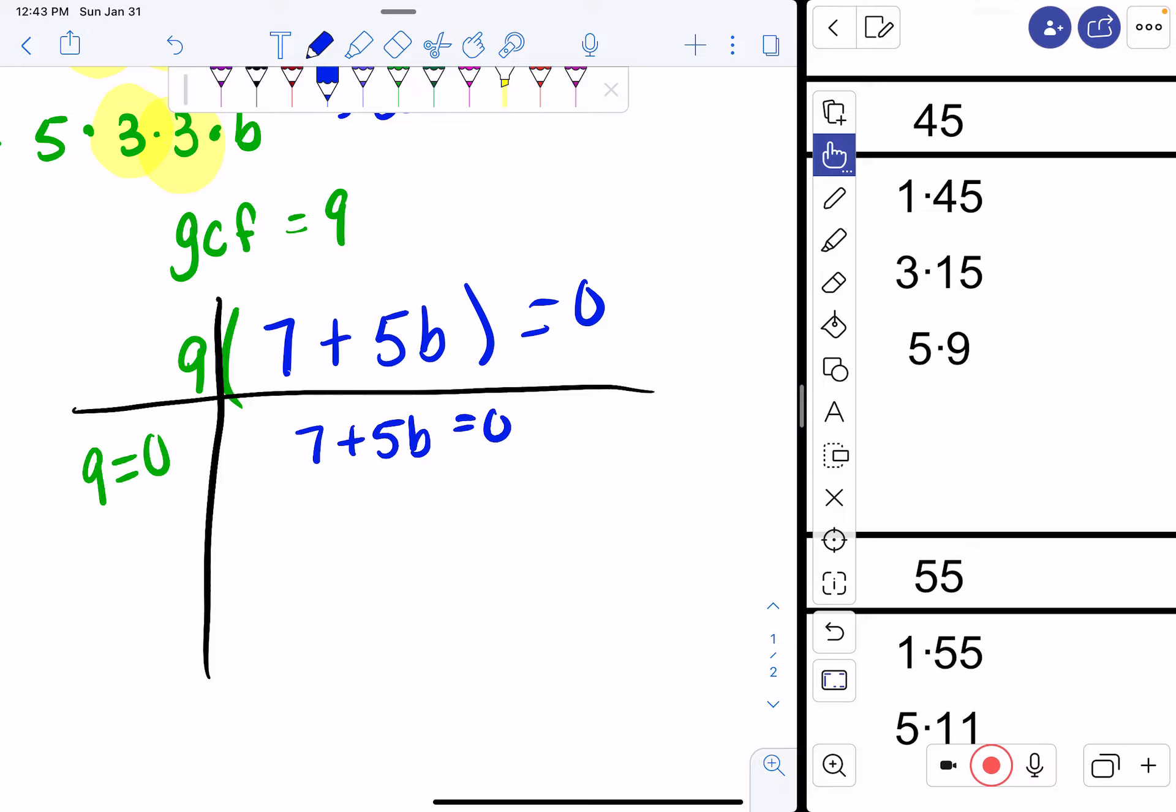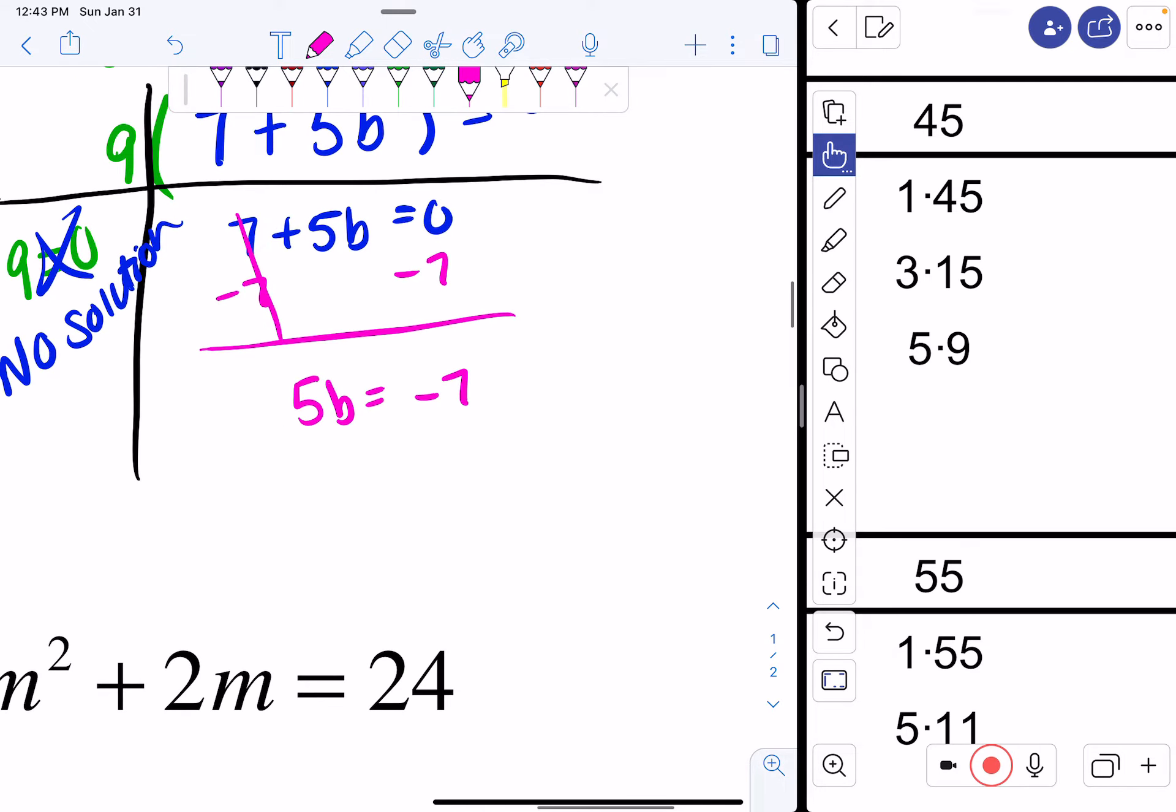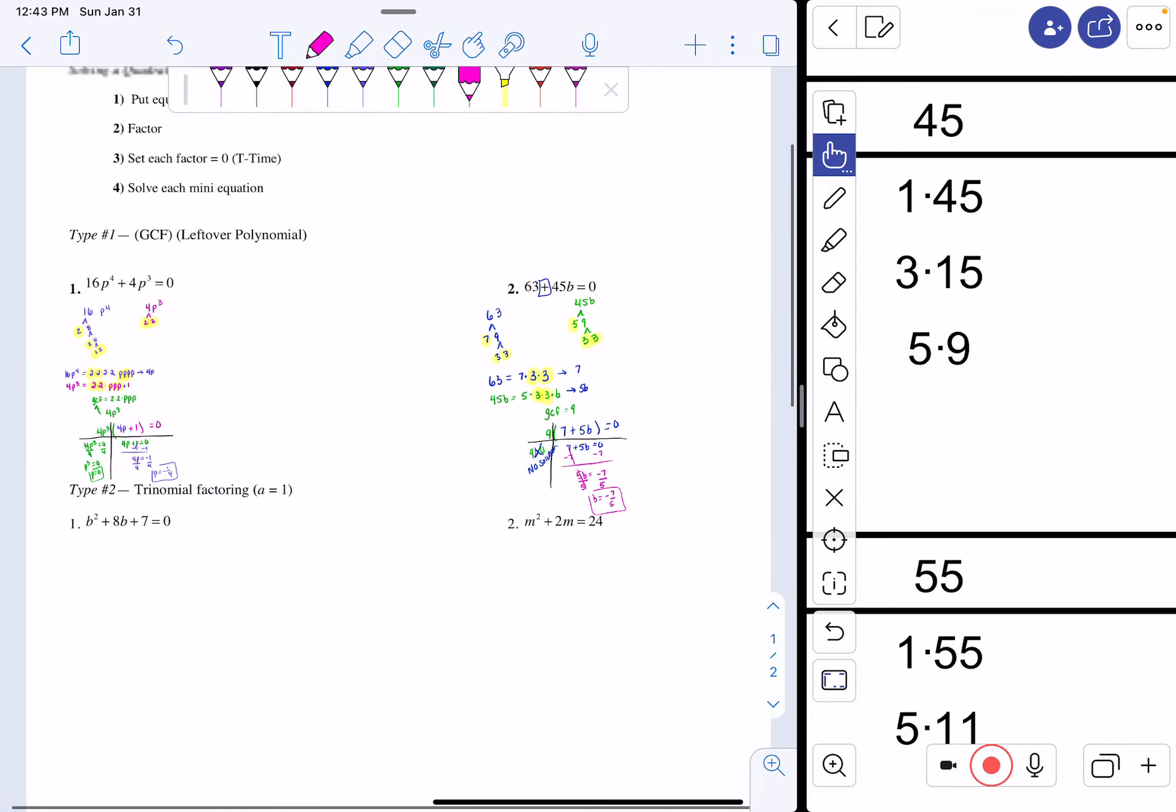Here's the issue. Can 9 ever be equal to 0? No solution. It can't happen. 9 is never equal to 0. Here, I need to ask myself, how do I get rid of my 7? I subtract 7 from both sides. And I get 5b equals negative 7. And then I just divide by 5. So I get b equals negative 7/5. And that's your final answer.